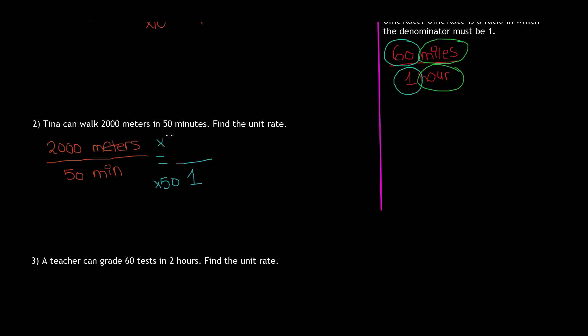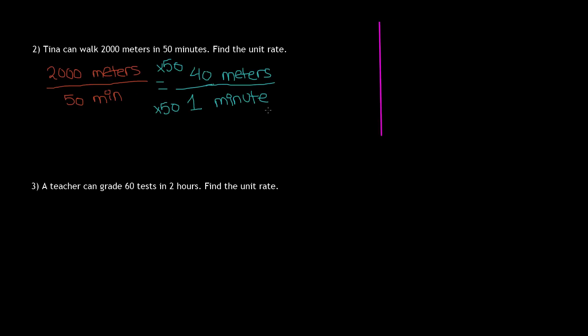So now what number times 50 will give us 2,000? Well, if we divide 2,000 by 50, we get 40 meters. So here, what this is telling us is that Tina can walk 40 meters in 1 minute or that it takes Tina 1 minute to walk 40 meters. So that's our unit rate.